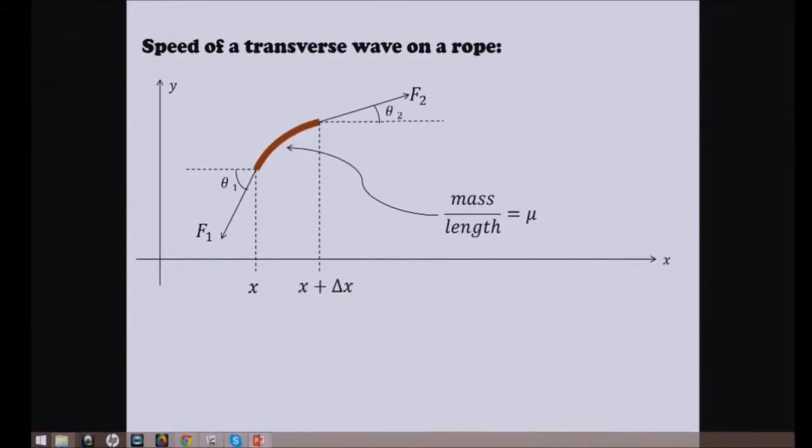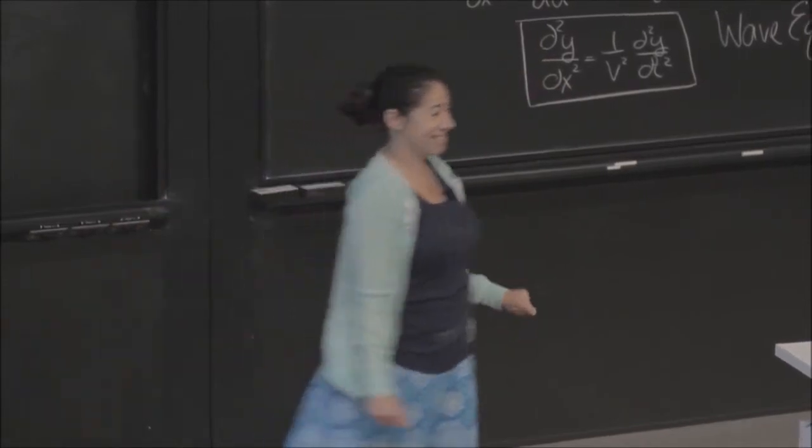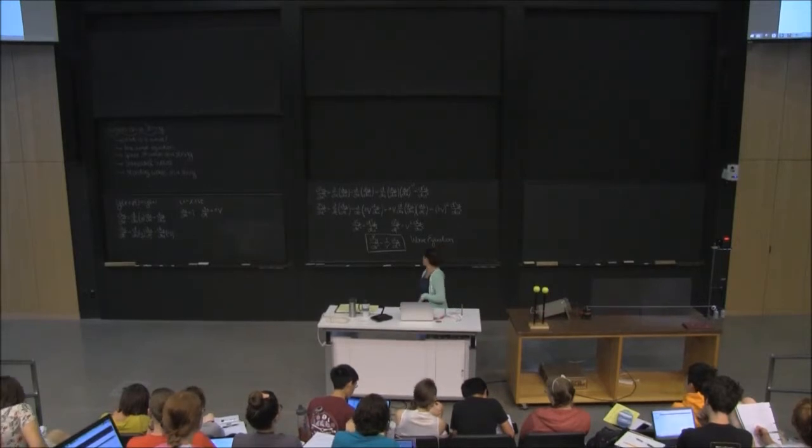So what we're going to do is, much like my demo, here I had a transverse wave on a rope. So a transverse wave is one that looks like this. So what we want to do is figure out if we can see the speed of this rope. Let's work this out.